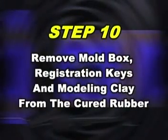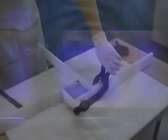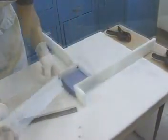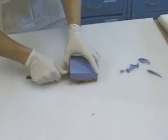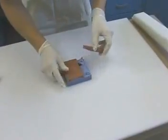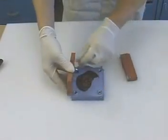The next step is to remove the clamps and mold box side walls. The mold structure is then flipped over. The cured rubber with the model still partially embedded is now resting on the platform.